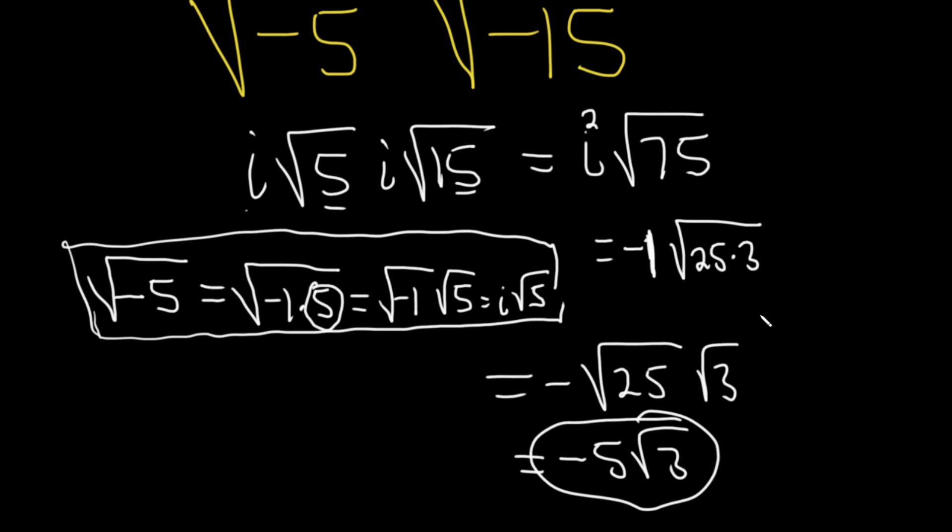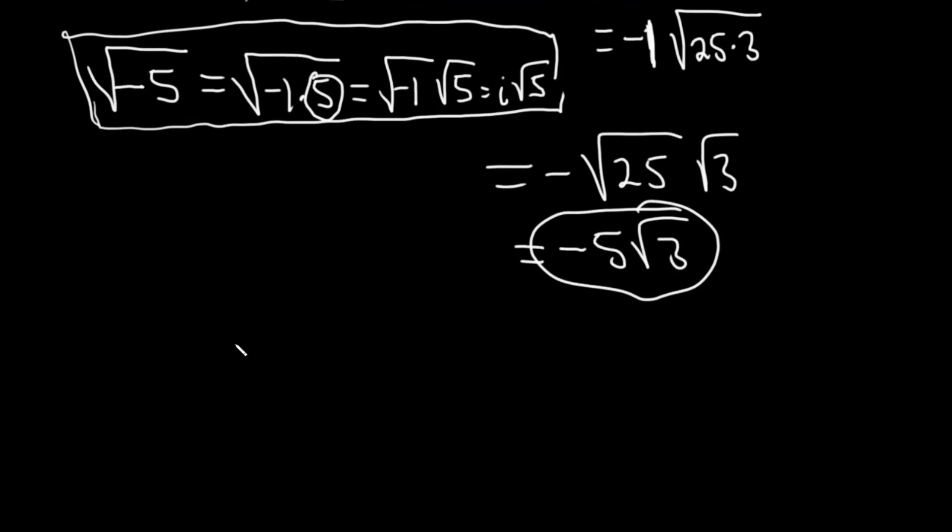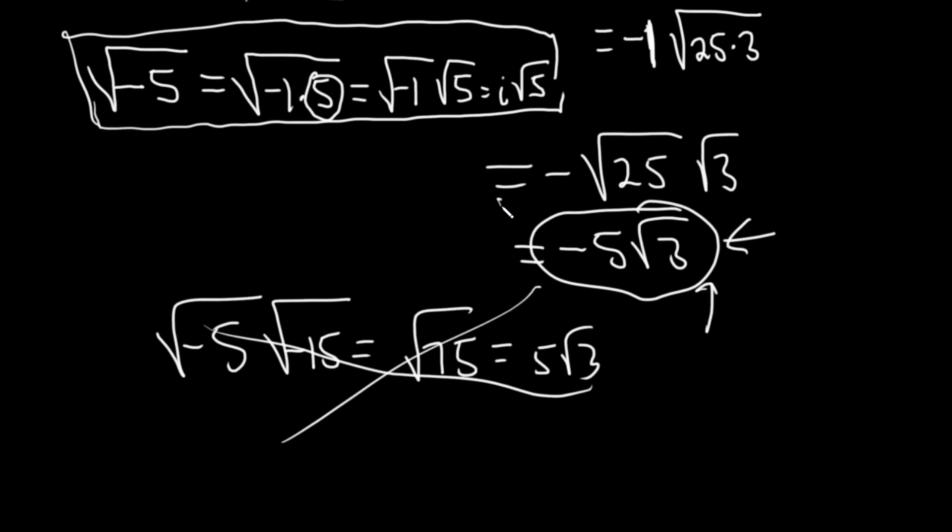So really key to know that. Notice what happens if you do it wrong. If you do it wrong, you just get the square root of 75, which ends up being 5 square root of 3. And that's the wrong answer. So there's only one correct answer, and that would be it.